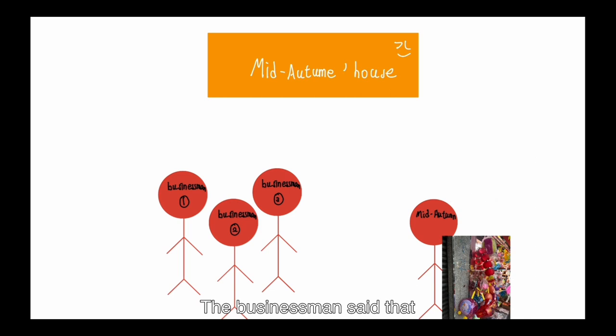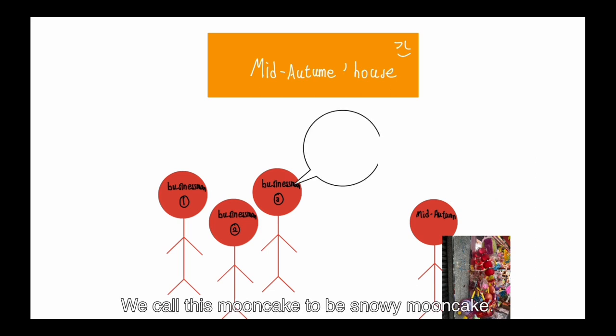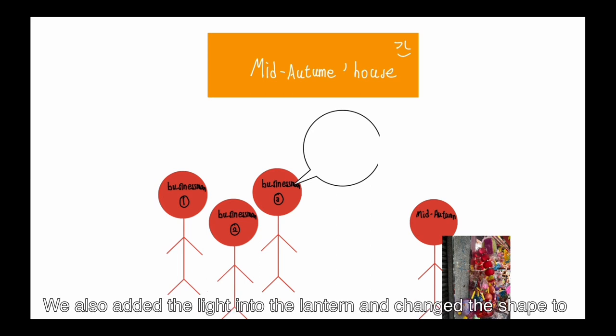The businessmen said that we call this mooncake to be snowy mooncake. We also added the light into the lantern and changed the shape to become funnier. The village saw that Mid-Autumn felt happy when he ate and claimed the new thing. So they decided to add this new thing to the celebration raid.